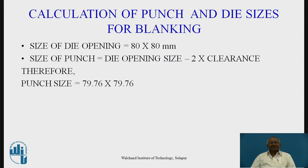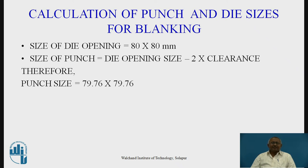For punch and die sizes for blanking: in blanking, the die opening size must perfectly match the blank size. Our blank is 80 × 80 mm, so the die opening is a square of 80 × 80 mm. The punch size must be smaller than the die opening by 2 times the clearance: punch size = die opening size − 2 × clearance = 80 − 2 × 0.12 = 79.76 mm. So the punch is a square of 79.76 mm, and the die opening is a square of 80 mm.